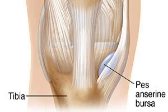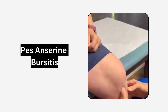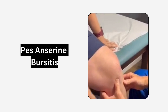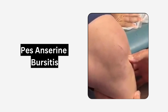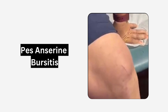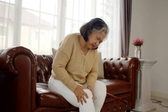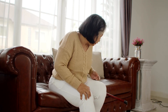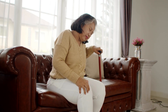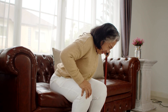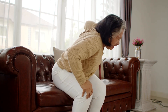The pes anserine bursa is a fluid-filled sac located on the inner side of the knee joint. It can become inflamed due to conditions like knee osteoarthritis, obesity, diabetes, or knee malalignment. This condition causes medial knee pain and tenderness over the upper medial tibia, just below the joint line. Pain is especially noticeable with activities such as rising from a chair, going up or down stairs, or lying in bed with one knee pressing against the other.